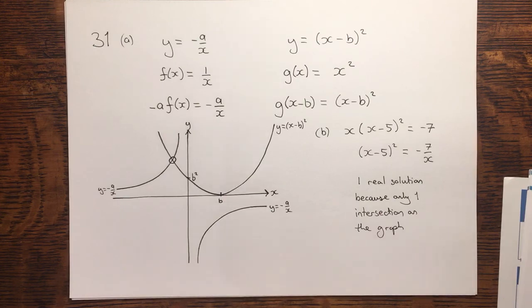One real solution, because only one intersection on the graph. And that's part b answered.